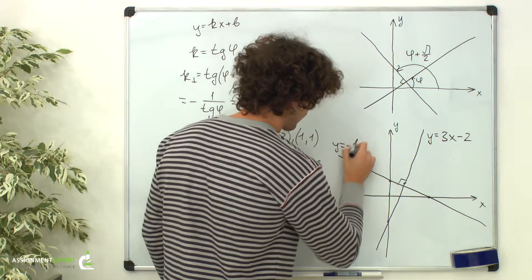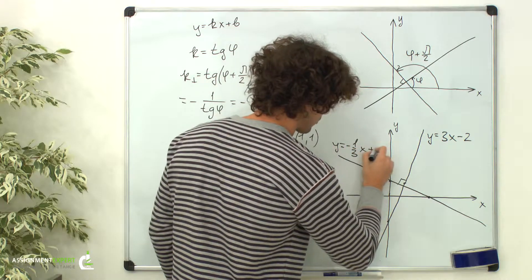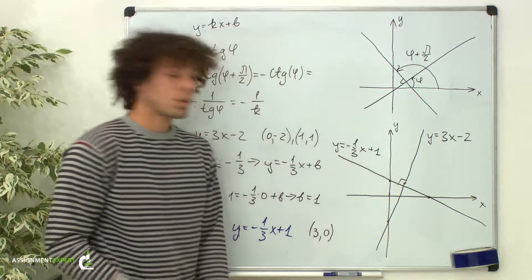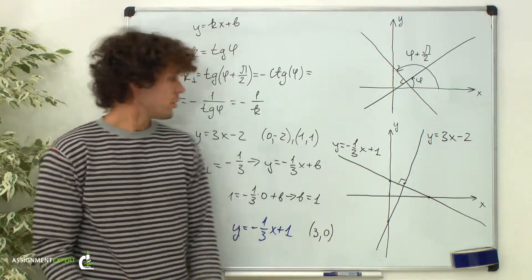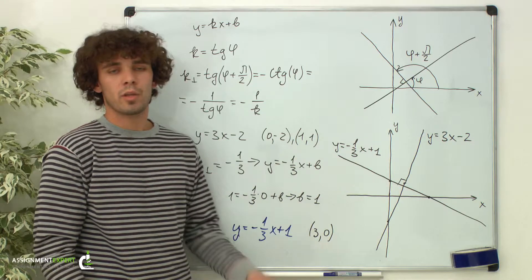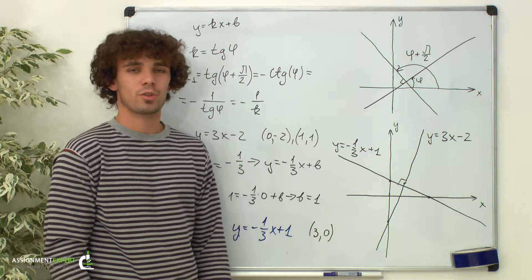y equals negative 1 third times x, plus 1. As we can see, the lines are really perpendicular. So, I suggest you remember that formula. It may be useful for you. Thanks for watching.